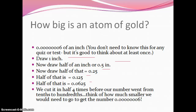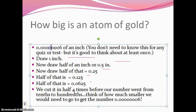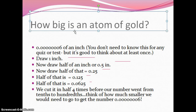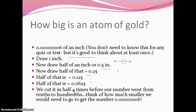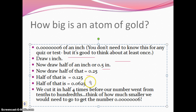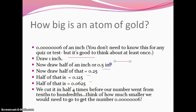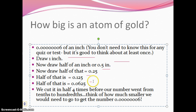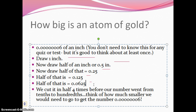How big is an atom of gold? You don't need to know this for any test or quiz, but a gold atom is 0.0000006 of an inch. Draw an inch, cut it in half, in half again, in half again — that's a 16th of an inch after four cuts. Think about how much smaller it would need to get to move a decimal that many places over, cutting in half over and over. It's crazy tiny.